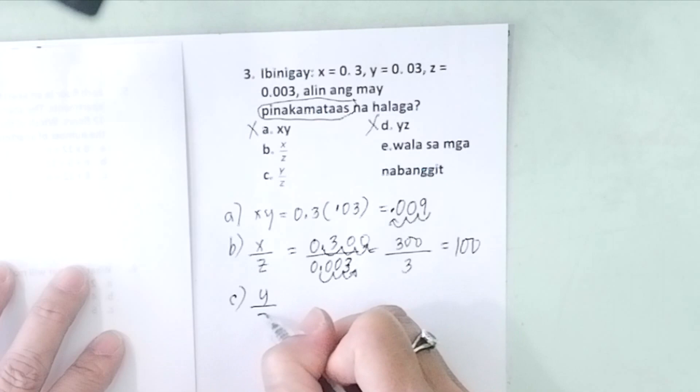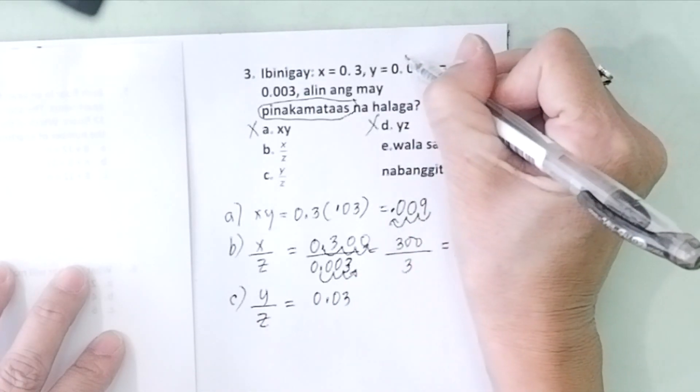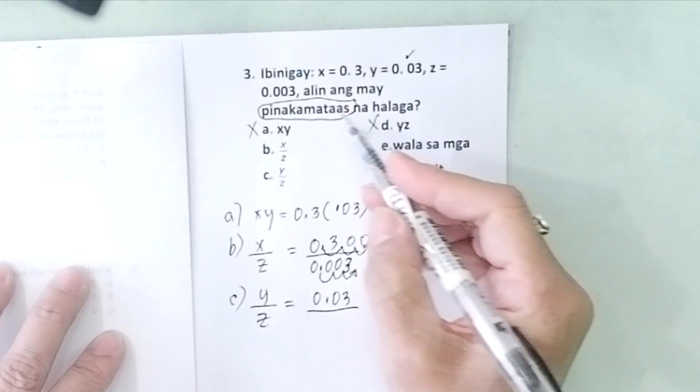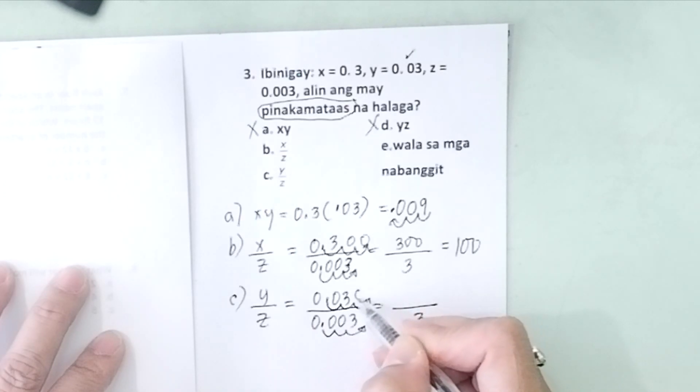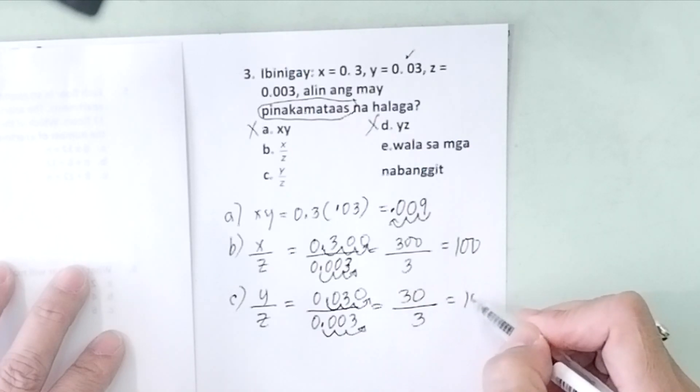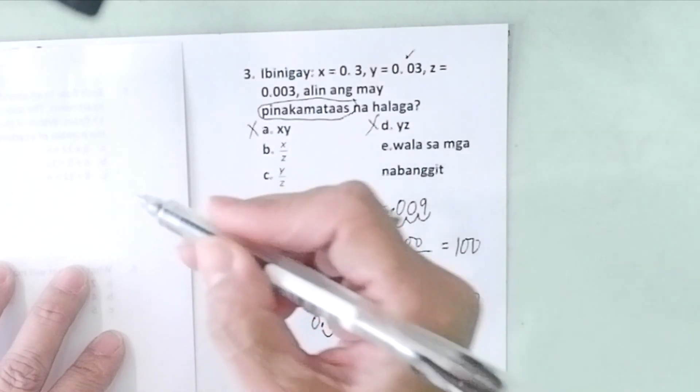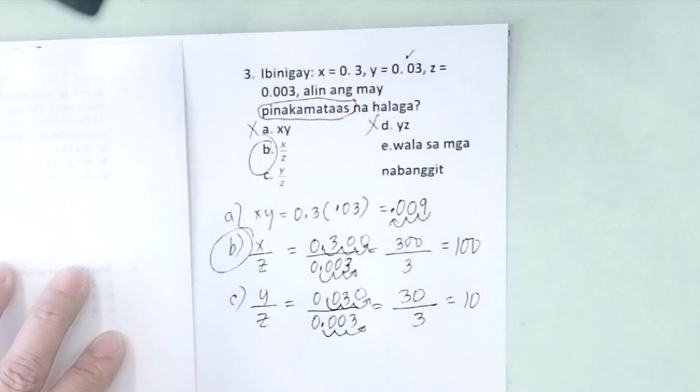Letter C: y over z. Y is 0.03 over z is 0.003. Or make this a whole number, move 1, 2, 3, we move it 3 places to the right. So you also move this 1, 2, 3, 3 places to the right. You have 30 over 3 is 10. So the correct answer is B.